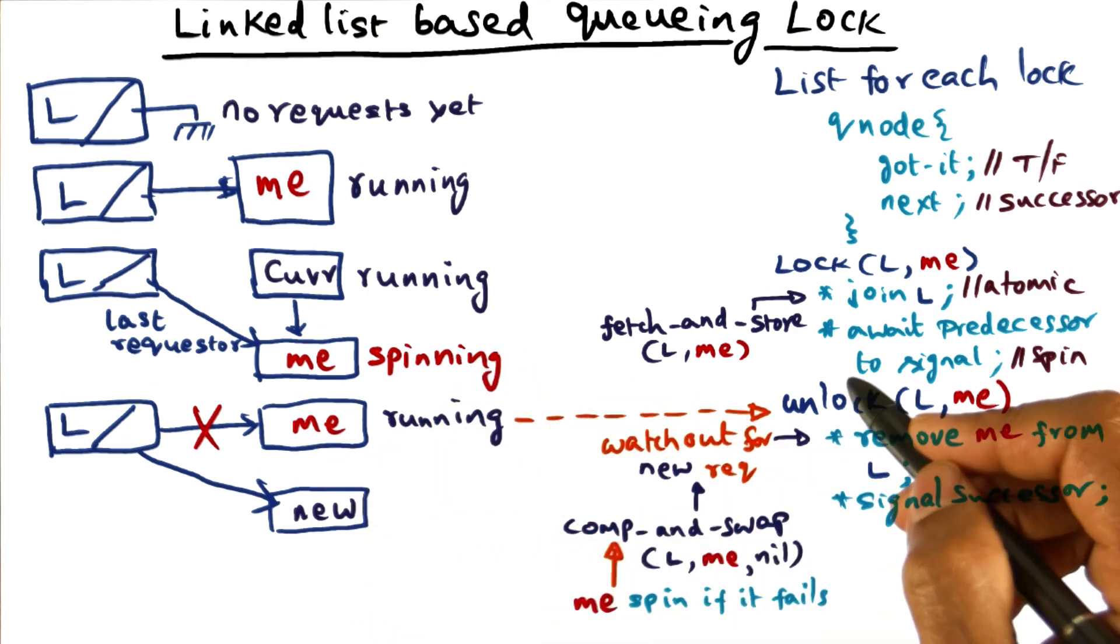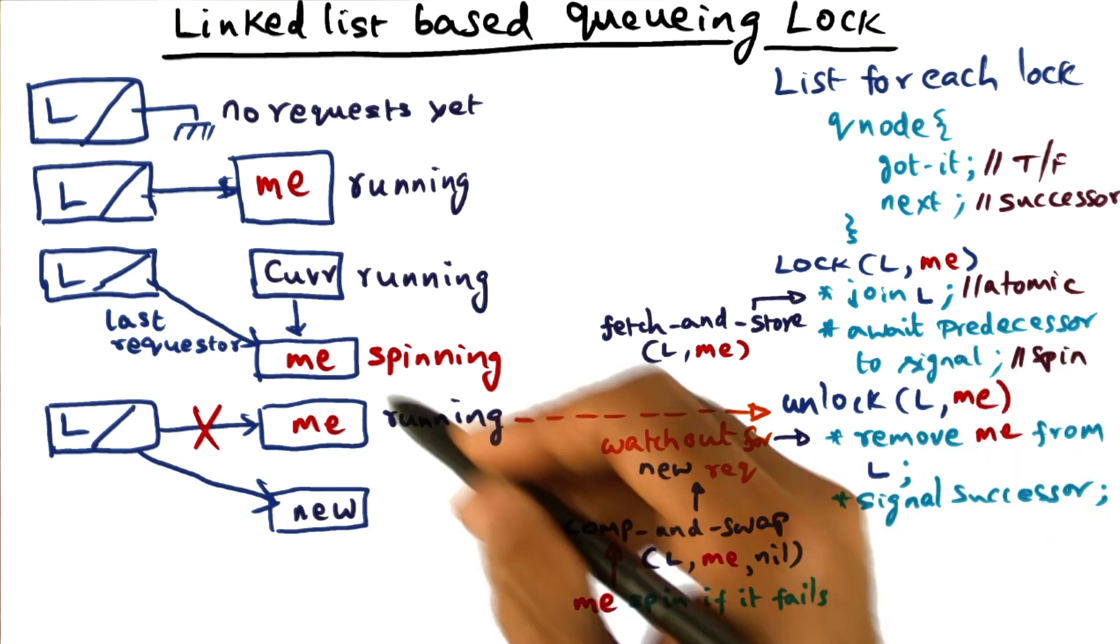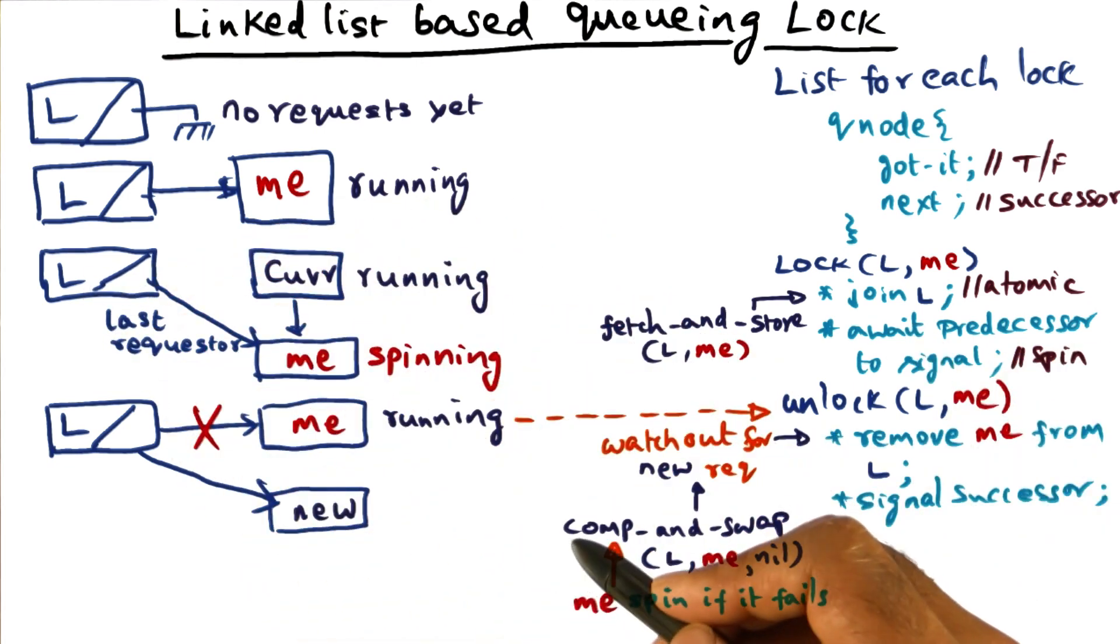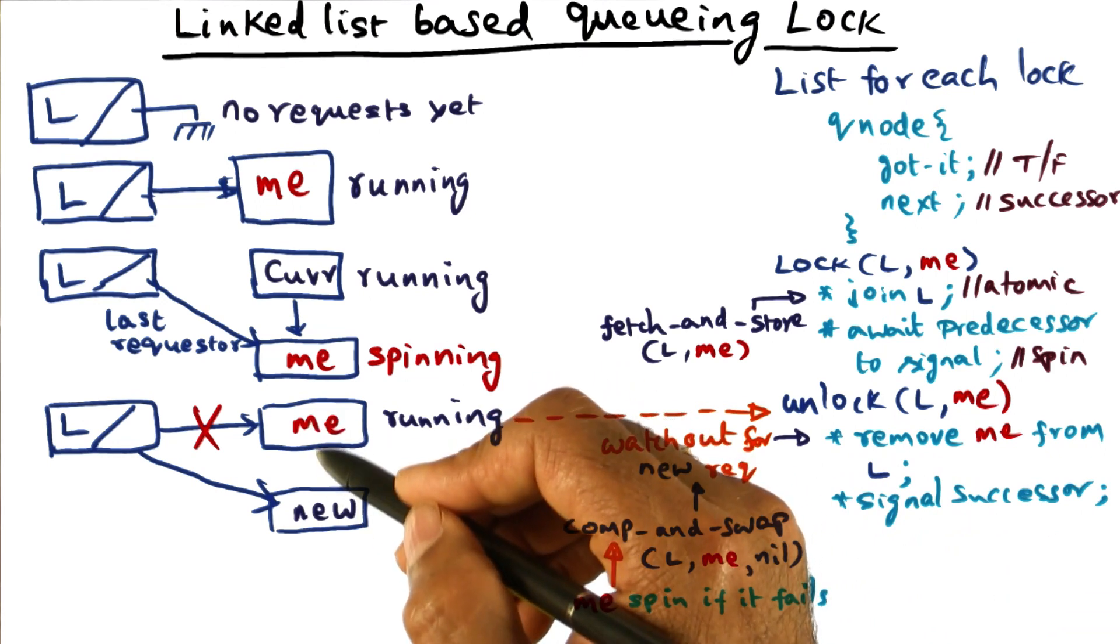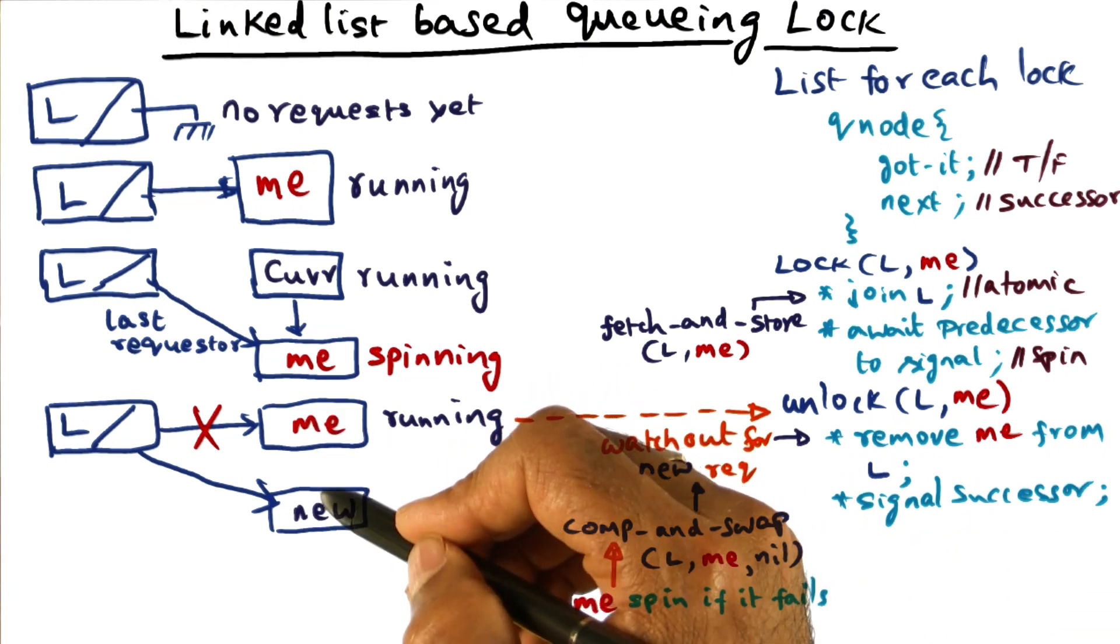Now when will my next pointer become not nil? Remember that this guy, the new guy that is doing this lock operation, is doing exactly what I did earlier. And what he's doing is, he's gotten my coordinates, and he's in the process of setting it up so that my next pointer is going to point to him.